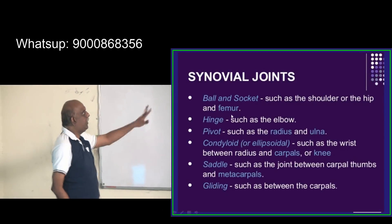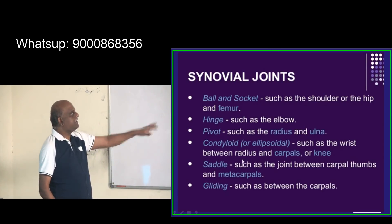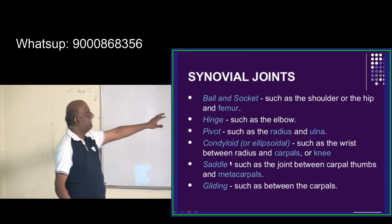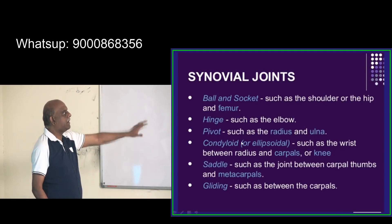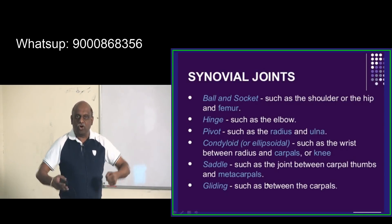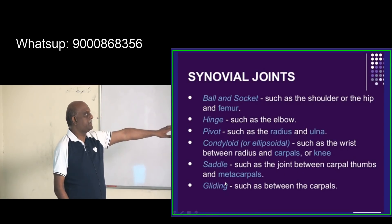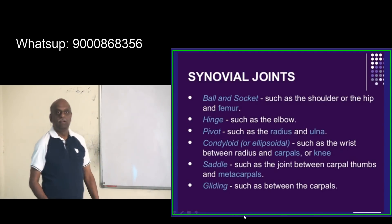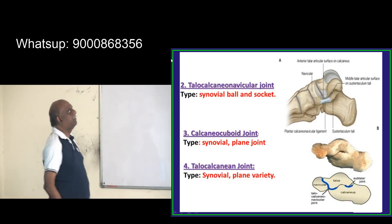The shoulder joint and hip joint are ball and socket joints. The elbow is a hinge joint. The radio-ulnar joint is a pivot joint. The wrist — between the radius and carpals (radiocarpal) — and the knee are condyloid or ellipsoidal joints. The carpometacarpal joint of the thumb is a saddle joint. The joints between the carpals are examples of gliding joints.